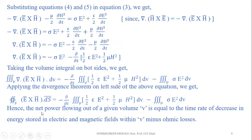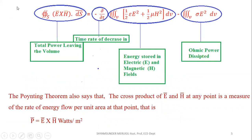Hence, we prove that the net power flowing out of a given volume V is equal to the time rate of decrease in the energy stored in the electric and magnetic fields within the volume V minus the Ohmic losses. The total power leaving the volume equals the time rate of decrease in energy stored in the electric and magnetic fields minus the Ohmic losses.